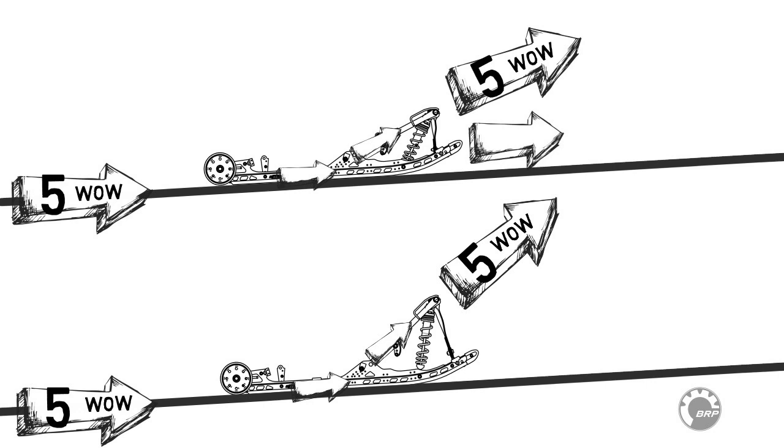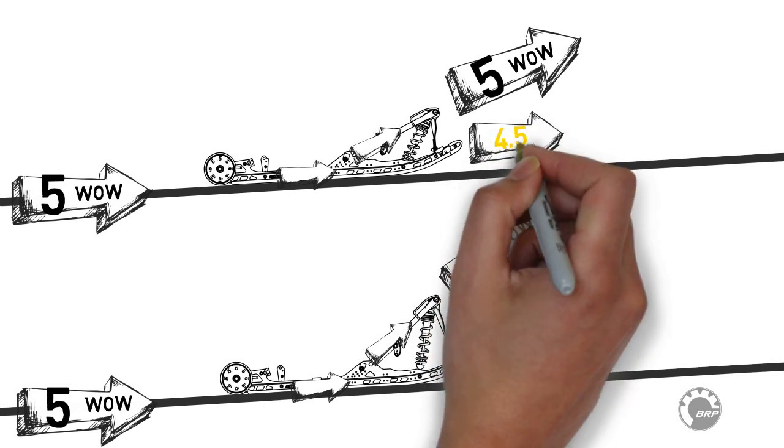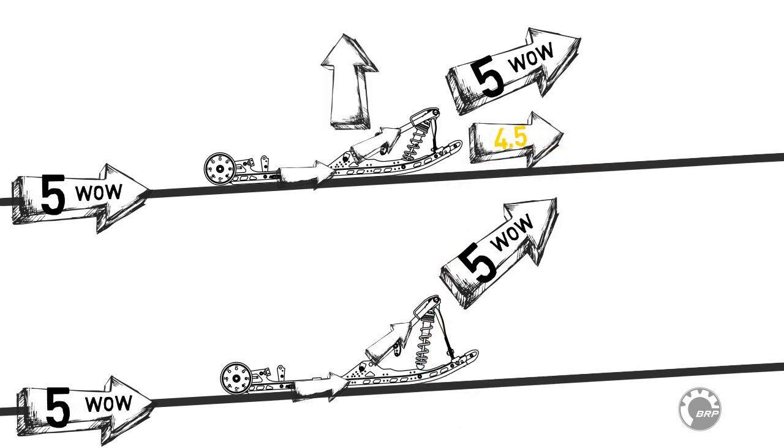In the first configuration, 4.5 WOWs are accelerating the snowmobile and 2.1 WOWs of force are lifting the chassis and providing traction by pushing the track into the snow.